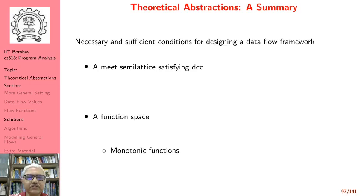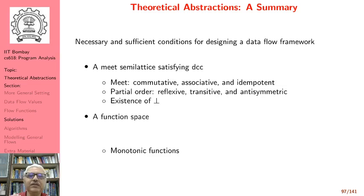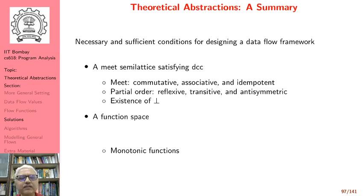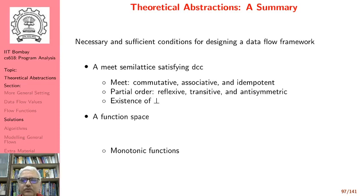We need a function space in which functions are monotonic. When we have a meet semilattice, the meet operator is commutative, associative and idempotent. It is important for us to check that the meet we are choosing satisfies these properties. Also the partial order that we define for our data flow analysis must be reflexive, transitive and antisymmetric. And if the meet is defined properly, the existence of bottom is already ensured.